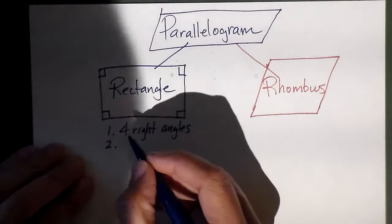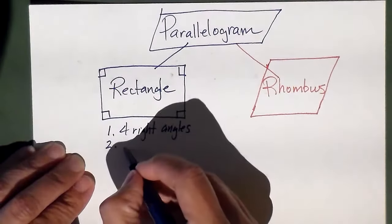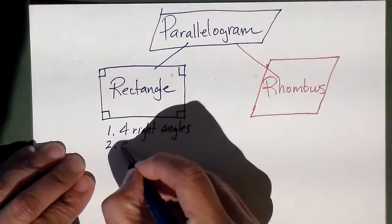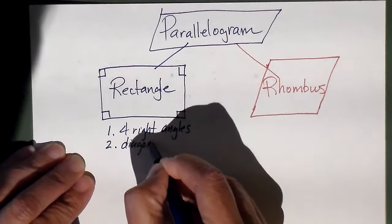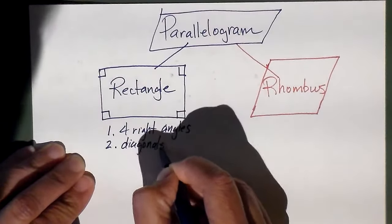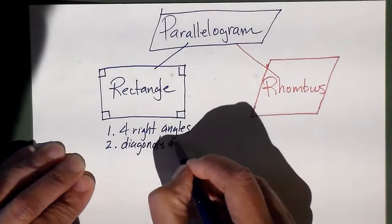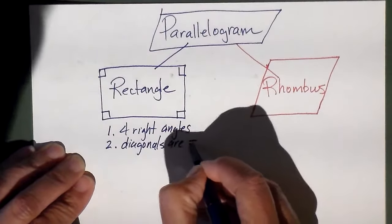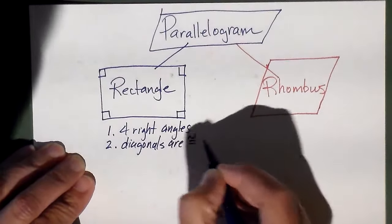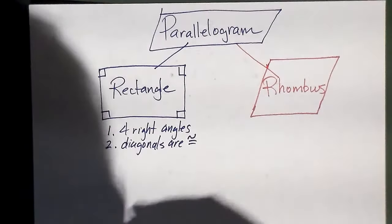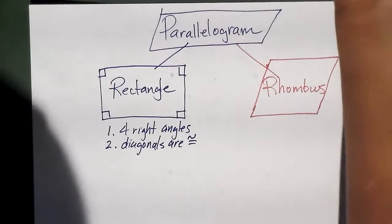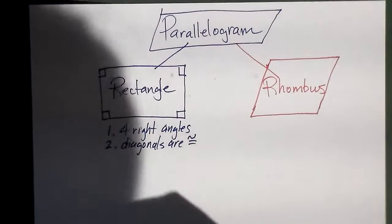Number two: the diagonals are congruent. Now what does that mean? Well, since it's a rectangle it's become symmetrical, right?